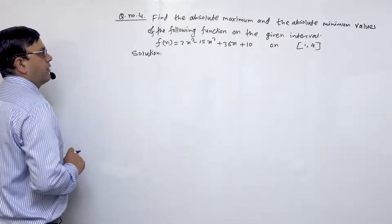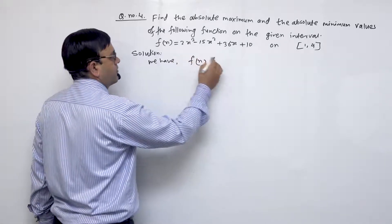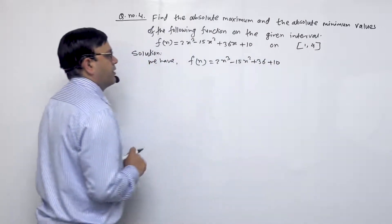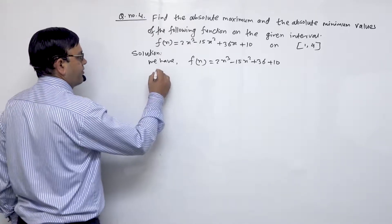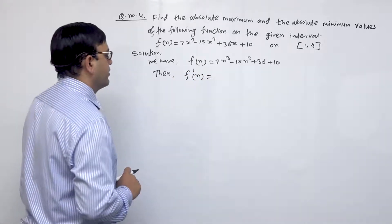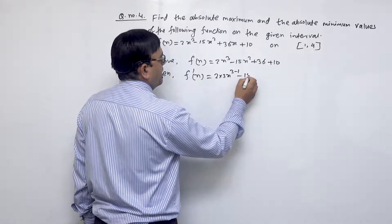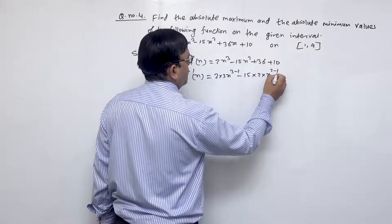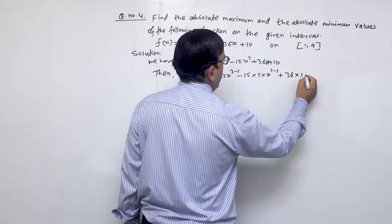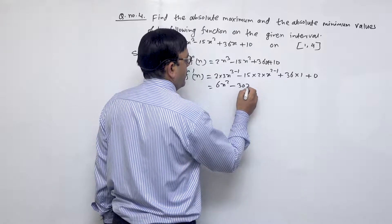Solution. We have the given condition: f(x) = 2x³ - 15x² + 36x + 10. Then the first derivative f'(x) = 2·3x² - 15·2x + 36 = 6x² - 30x + 36.